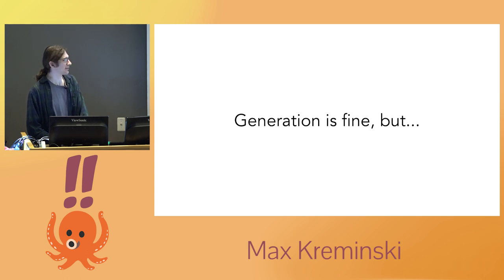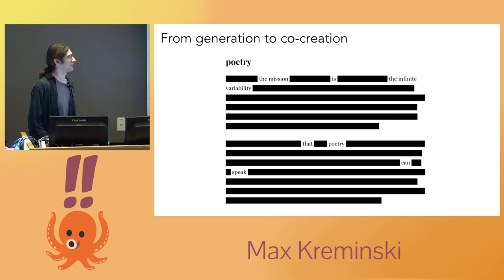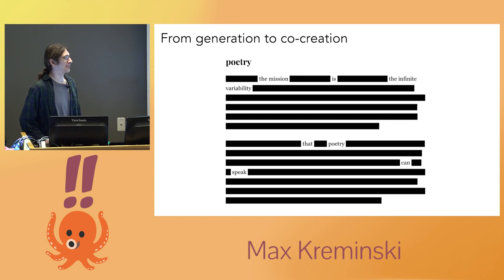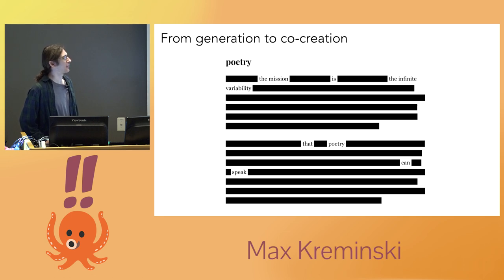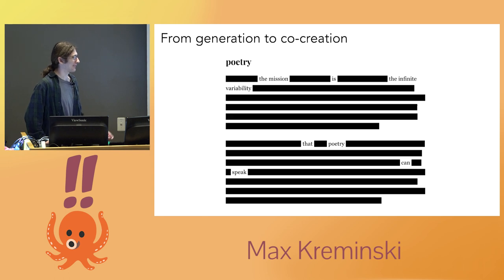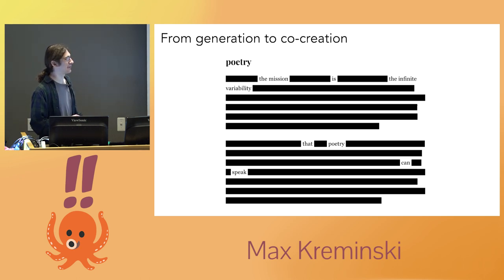Generation is fine, and we produce really cool stuff with it — like one of my favorite outputs ever: "The mission is the infinite variability that poetry can speak." I think this is really personally beautiful. But it's also a beautiful lie. The reason it's a lie is because these are two separate paragraphs, and the computer has no idea they're related at all. The generator looks at each paragraph and tries to turn it into a separate piece of blackout poetry. So we actually have two sentences: "The mission is the infinite variability" — which is okay — and "that poetry can speak" — which is not actually even grammatical. The really great thing is that because these two things are juxtaposed, even though the computer has no idea they're juxtaposed, it produces a better work of poetry overall than the computer itself can actually do.